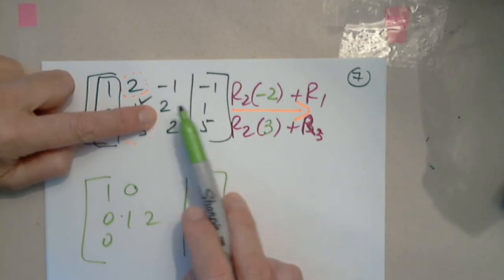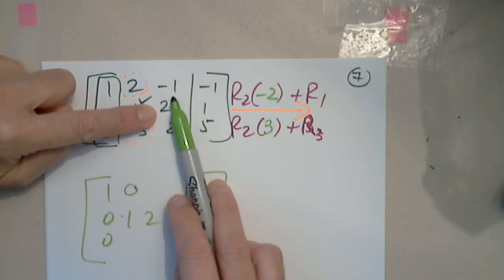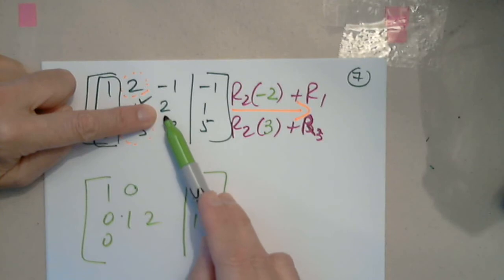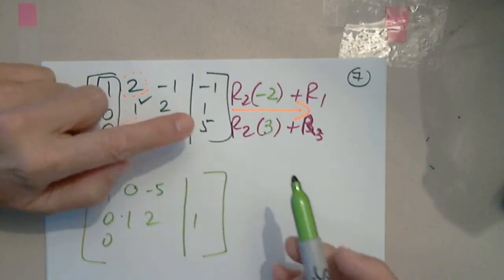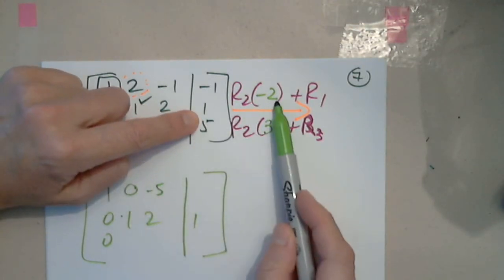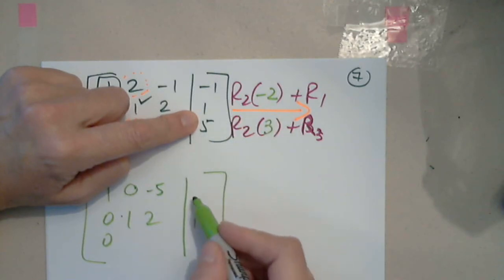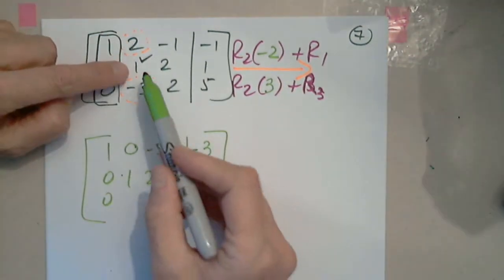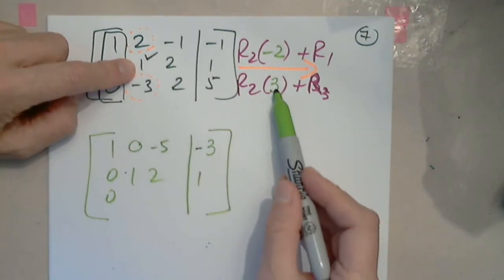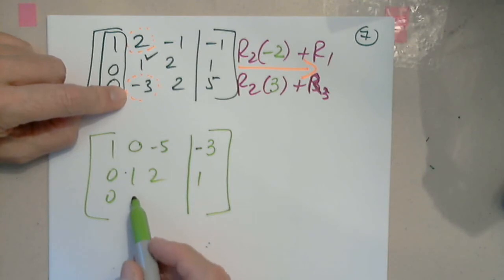2 times negative 2 minus 1: negative 5. 1 times negative 2 minus 1: negative 3. 1 times 3 plus minus 3: zero.